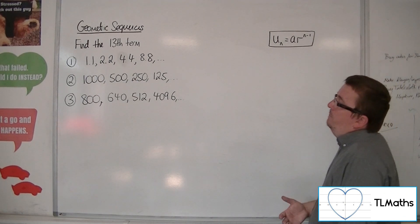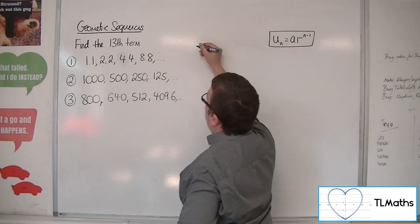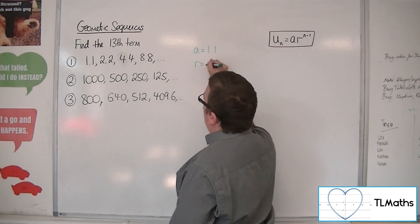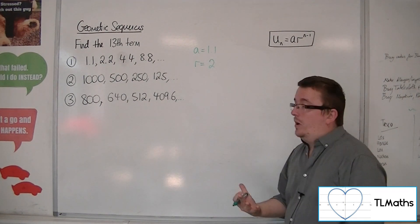Number 1, we've got 1.1, 2.2, 4.4, 8.8. So clearly the first term is 1.1. The common ratio we can see is 2, or we could do 2.2 divided by 1.1, you get 2.